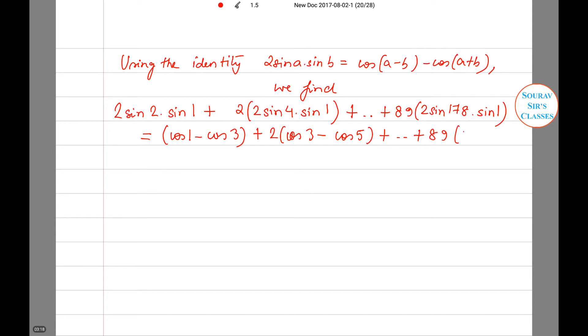Opening the brackets, this becomes: cos 1° + cos 3° + cos 5° + ... + cos 175° + cos 177° minus 89 cos 179°.